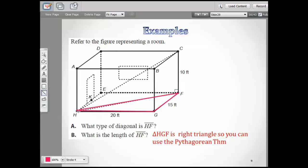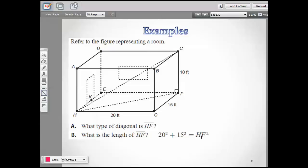20 squared plus 15 squared equals HF squared. Now let's work that out. 400 plus 225. And you know what? I don't know why they put HC right here. That should be HF.